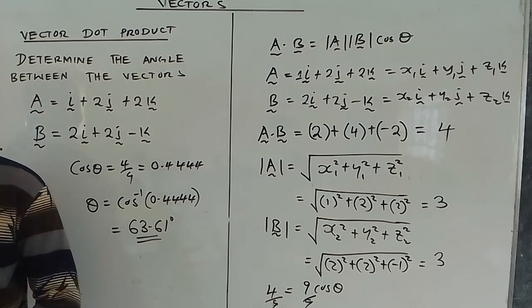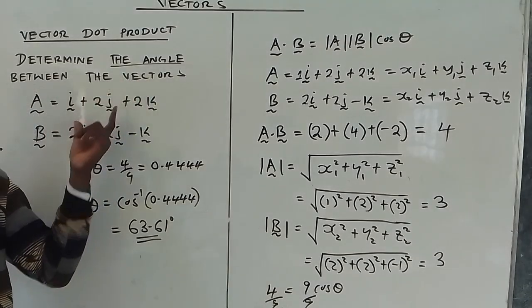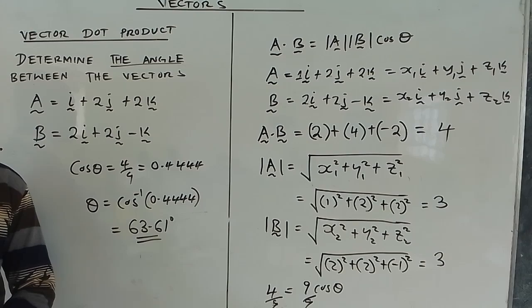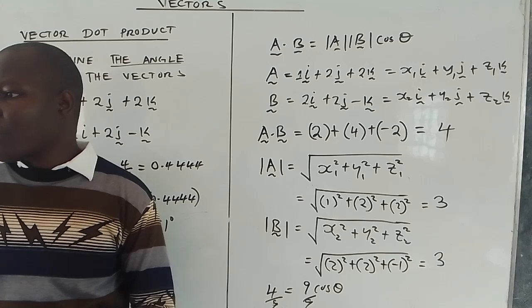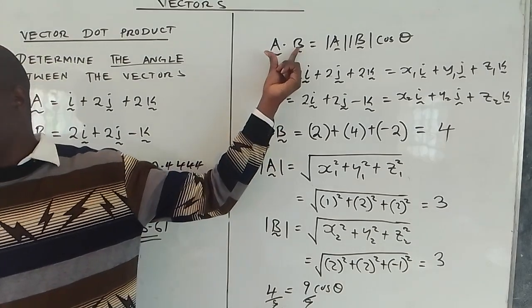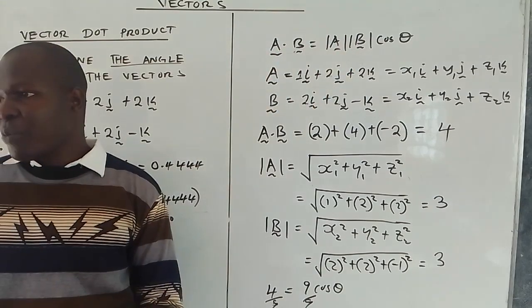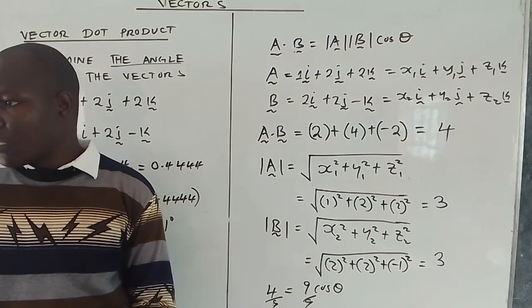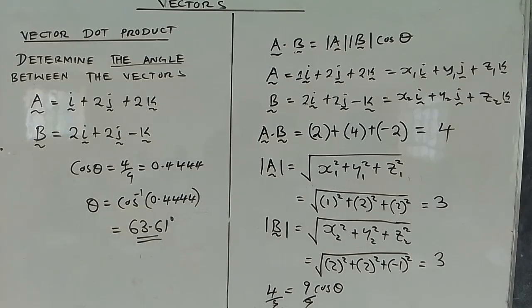Anytime you are told to determine the angle between two vectors, that is the concept of the vector dot product. You look for the dot product of the two vectors and their respective magnitudes, substitute into the formula, and you will be able to get that angle. That is how to handle such cases.